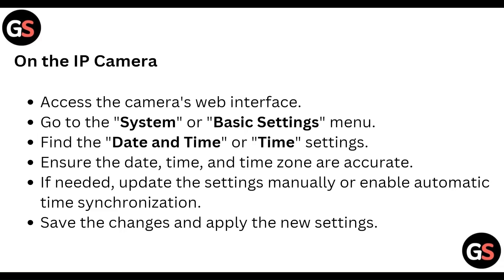On the IP camera, access the camera web interface and go to the system menu and find the date and time settings. Ensure the date, time, and time zone are accurate according to your area. If needed, update the settings manually or enable automatic time synchronization. Save the changes and apply the new settings.